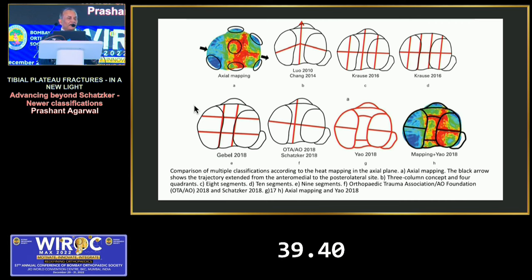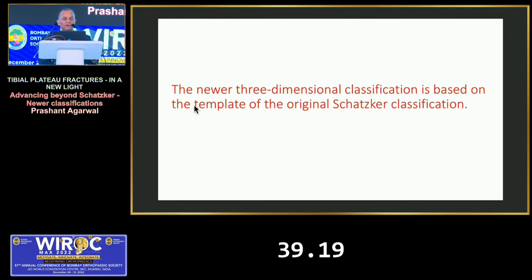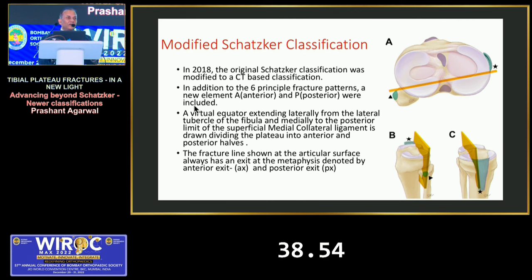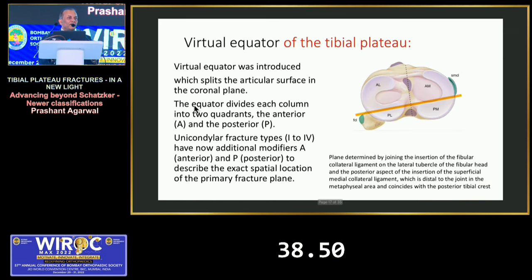Many classifications have been described in the literature. Yawas in 2018 divided it into 9 segments. The Schatzker classification was modified in 2018 incorporating CT scan data, which gives very good information about fracture patterns. The modified Schatzker classification incorporates the old classification and takes into account 3D imaging. A virtual equator — the line joining the fibular head anterior margin and posterior attachment of the medial collateral ligament — divides the plateau into anterior and posterior segments.